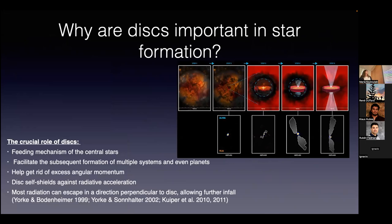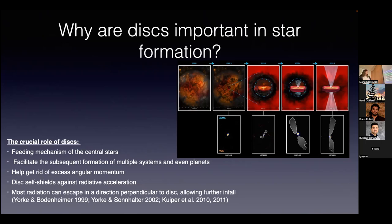During the formation process we have the creation of the disk, which is important both in low and high mass stars. The disk is the main feeding mechanism onto the star. In the case of higher mass stars, it can allow the detection of companions and multiple systems, but importantly it helps get rid of excess angular momentum. The disk also shields against the strong radiation that massive stars have. This is one of the key questions of how they can become so massive — the radiation needs to escape, and with a disk it can escape perpendicular to the disk, allowing further infall and formation of a more massive star.